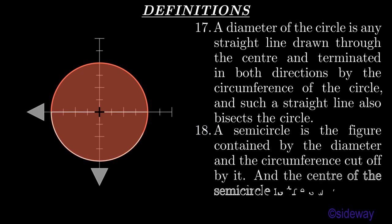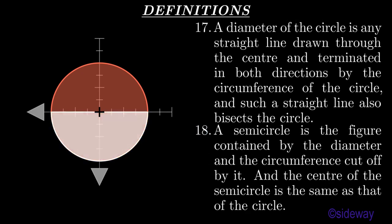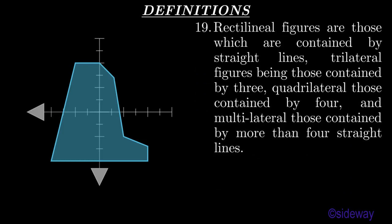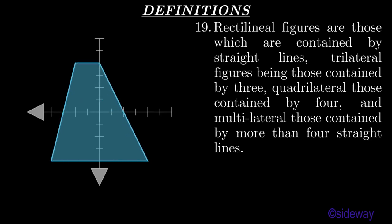A semicircle is the figure contained by the diameter and the circumference cut off by it, and the center of the semicircle is the same as that of the circle. Rectilinear figures are those which are contained by straight lines: trilateral figures being those contained by three, quadrilateral those contained by four, and multilateral those contained by more than four straight lines.